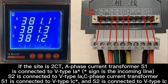A phase current transformer S1 is connected to V-type IA. S2 is connected to V-type IA. B phase current transformer S1 is connected to V-type IB.